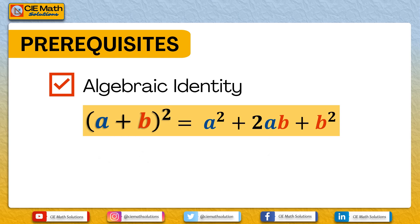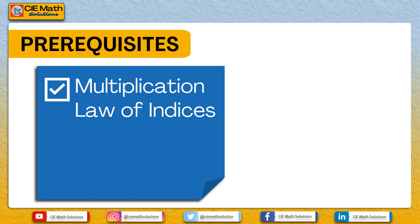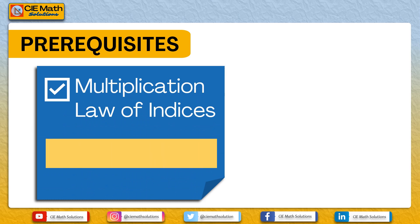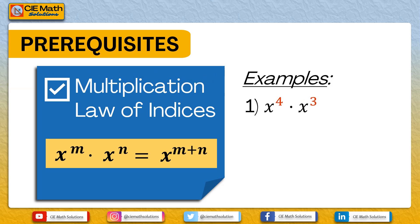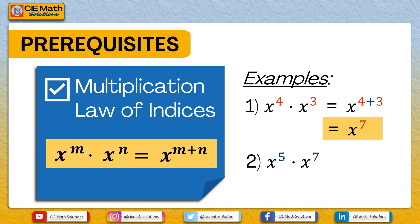The next prerequisite concept is the multiplication law of indices, which states that the product of two terms of the same base — x raised to m and x raised to n — is equal to the same base raised to the sum of its indices, that is x raised to m plus n. For example, x raised to 4 times x raised to 3 equals x raised to 7. And x raised to 5 times x raised to 7 equals x raised to 12.